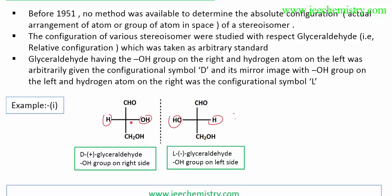According to this reference, we provide the DL nomenclature to other compounds with respect to glyceraldehyde. Glyceraldehyde with OH on the right side and H on the left side is given D configuration, while the mirror image with OH on the left side and H on the right side is given L configuration.